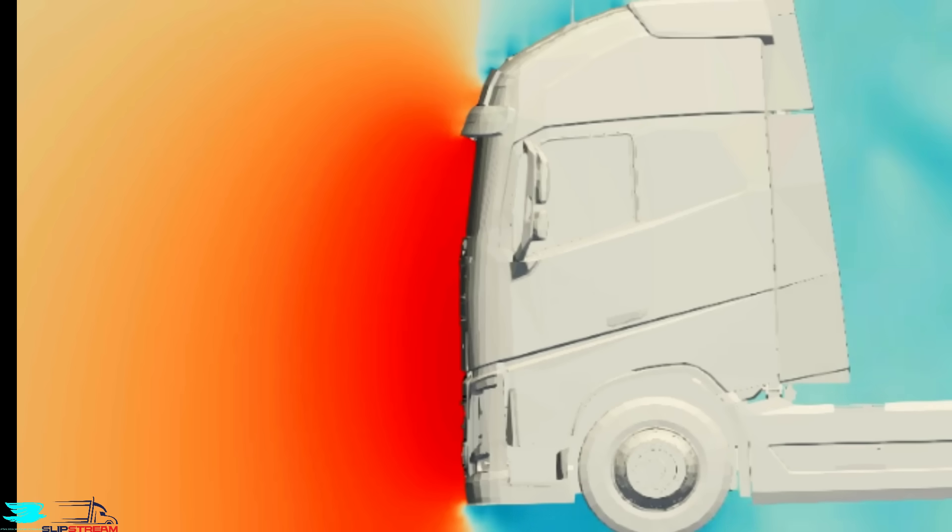In the pressure plot, you can see just how much high pressure forms on the front. Effectively, the entire front except the top sliver is in high pressure. That pushes the truck back and increases the drag dramatically.